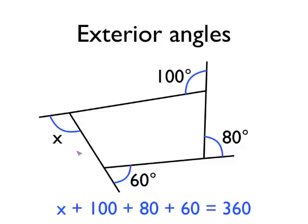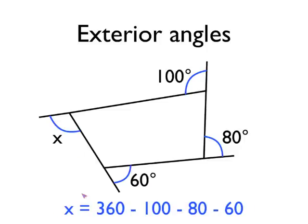Well, using our angle rule that we've just learned, we know that X add 100, add 80, add 60, must be equal to the 360 degrees total. Or another way of thinking of it would be to say, take our 360 degrees, which is our total. If we take away from that 100, take away 80, take away 60, what we'll be left with would be angle X.